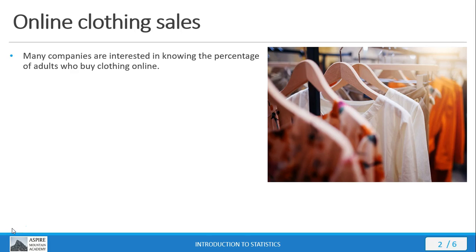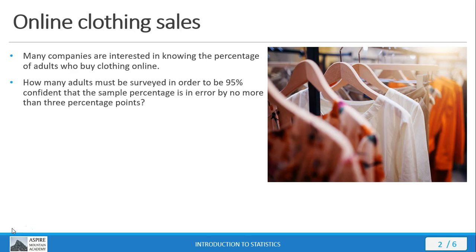Let's look at an example problem involving online clothing sales. Many companies are interested in knowing the percentage of adults who buy clothing online. This is especially true if the companies are selling clothing. So the question is, how many adults must be surveyed in order to be 95% confident that the sample percentage is in error by no more than 3 percentage points?